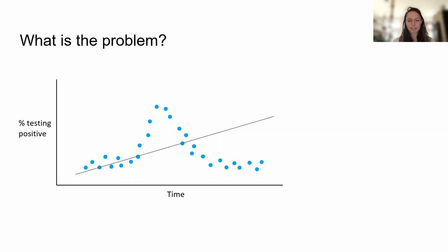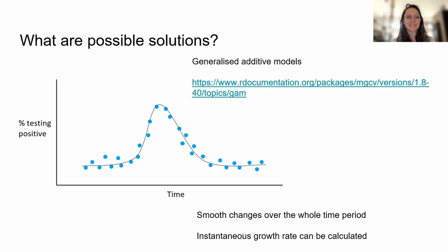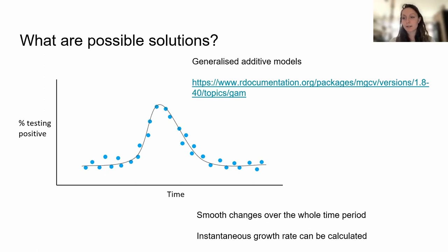The simplest answer would be standard linear regression — fitting a straight line through the data. But you can quickly see how that will fail to have high enough complexity for the data you're trying to model. Some possible solutions: generalised additive models, or GAMs, which you can easily implement in R using the mgcv package. What they do is look for smooth changes over the whole time period. You can calculate an instantaneous growth rate by looking at the first derivative, and look at times when changes took place using the second derivative.